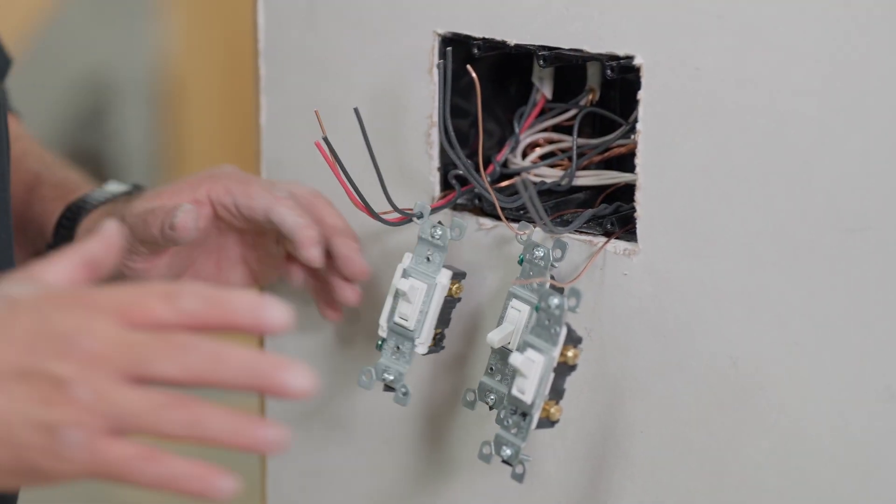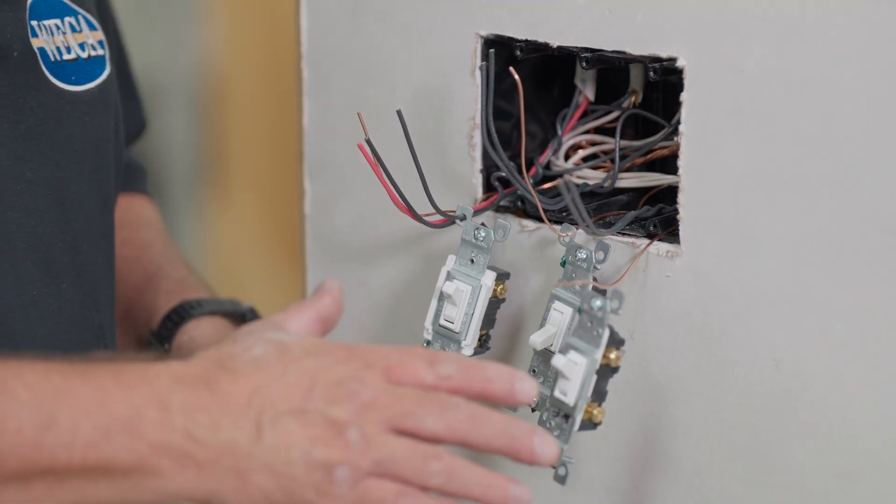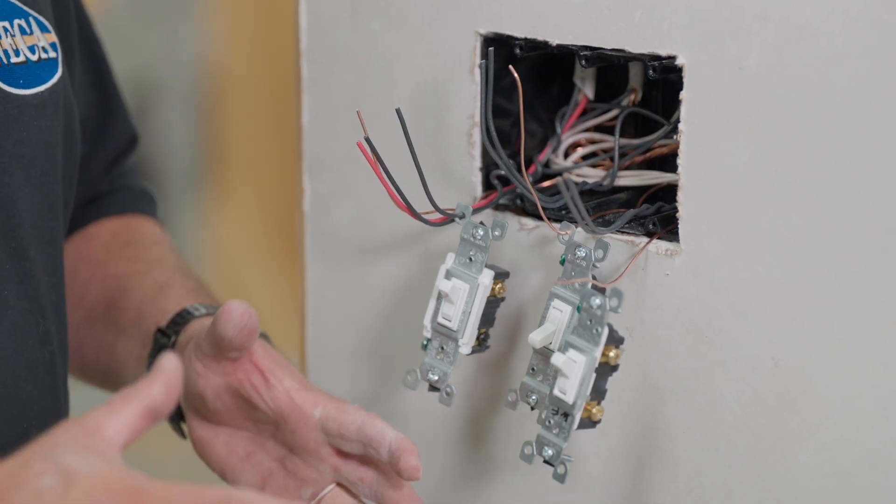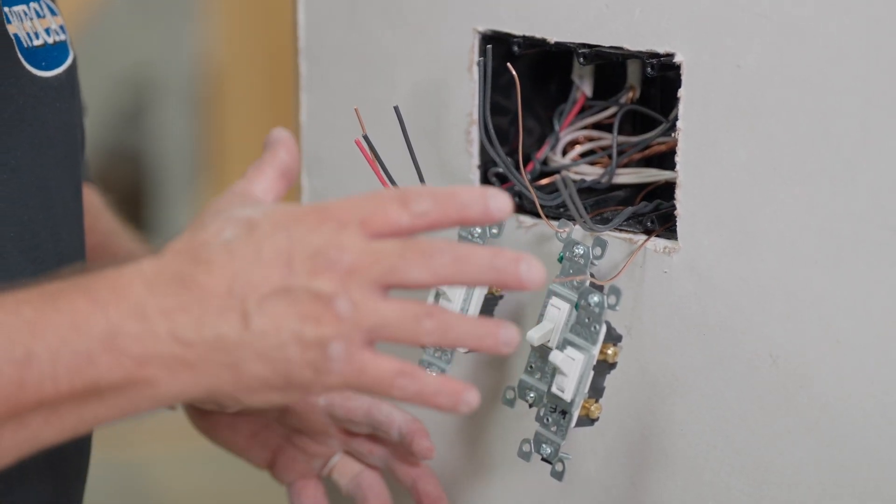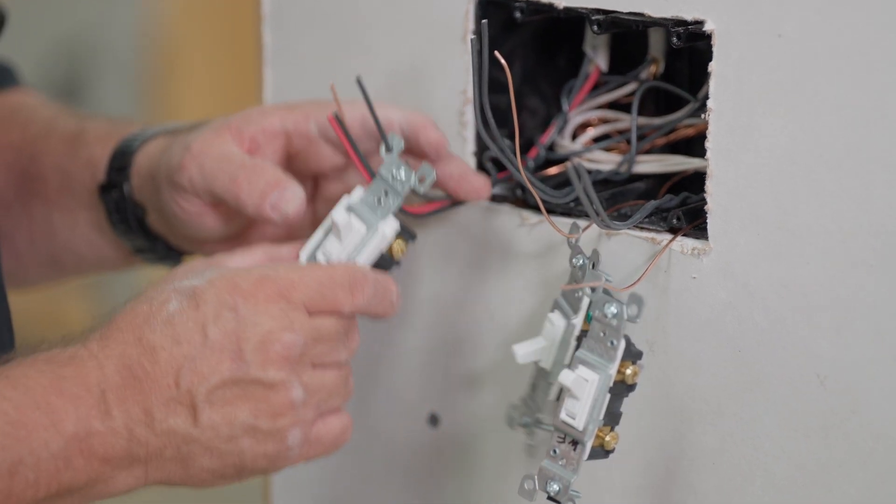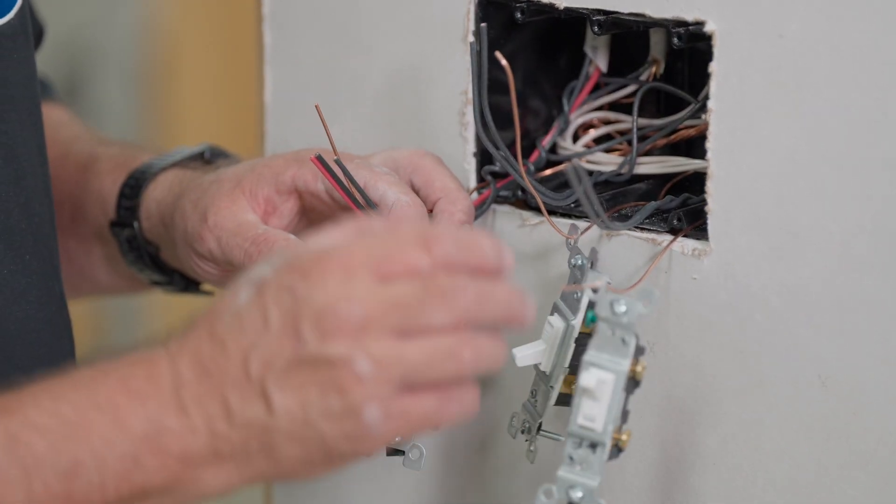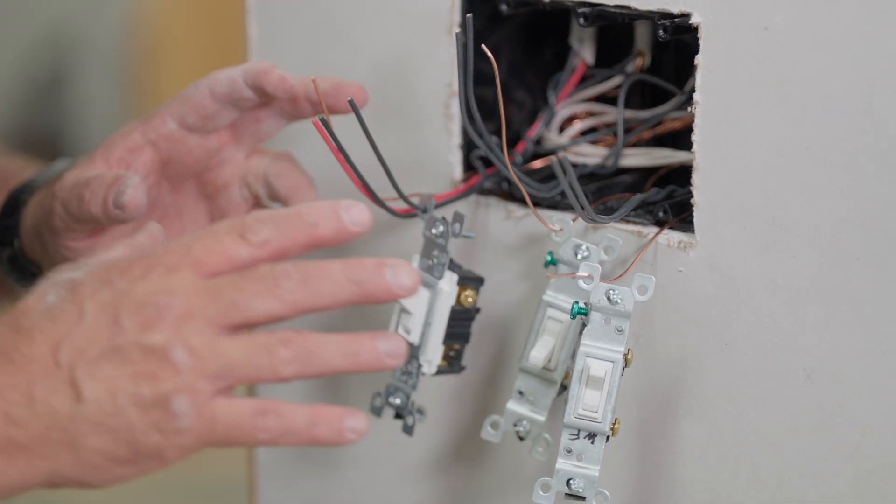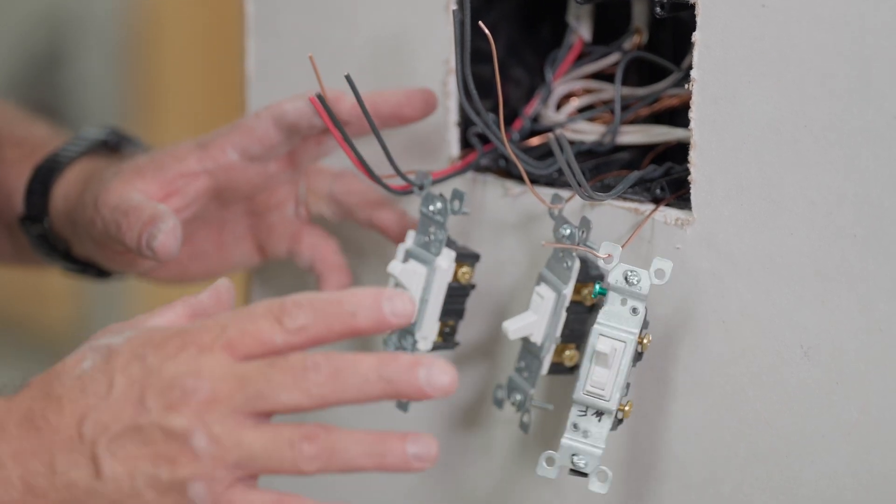Usually when you're doing trim stage, you're trimming an entire house or a building. So what someone usually does, they'll go and lay these out. They'll pull the wires out and lay out the type of switch that goes on each of the different switches. Double-check that it's correct before you install them.